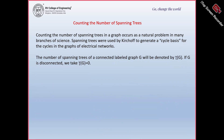Next is counting the number of spanning trees. Counting the number of spanning trees in a graph occurs as a natural problem in many branches of science. One application is that spanning trees were used by Kirchhoff to generate a cycle basis for the cycles in graphs of electrical networks. The number of spanning trees in a connected labeled graph G is denoted by tau of G. If G is disconnected, then the number of spanning trees is equal to 0.